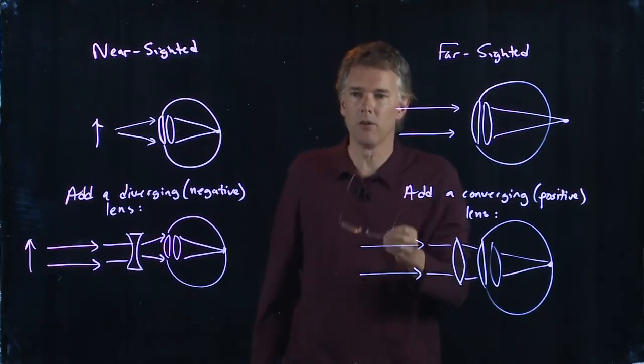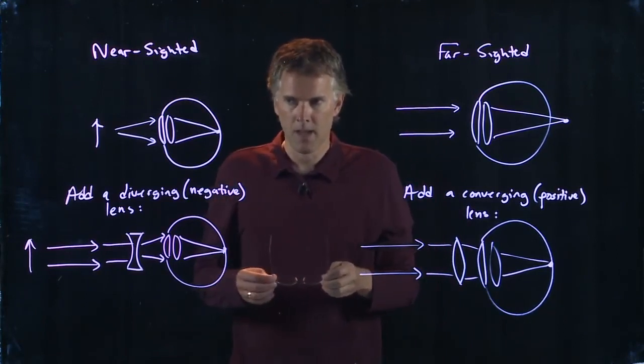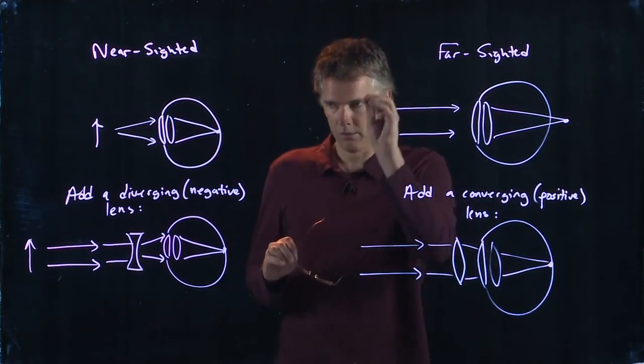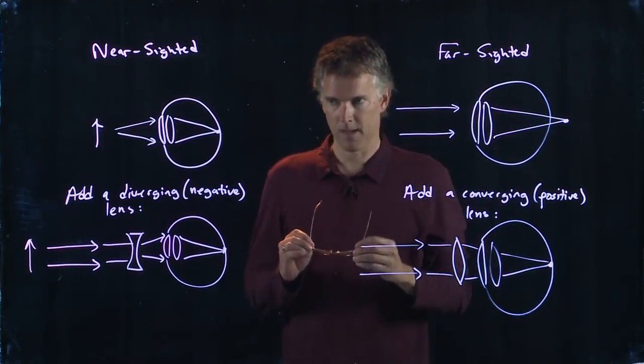That's how you know it's a positive lens. If it's a negative lens, the outside world will always look smaller.